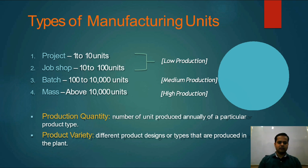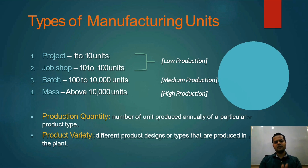Next are the types of manufacturing units. There are four types: first is project production, second is job shop, third is batch production, and fourth is mass production manufacturing.